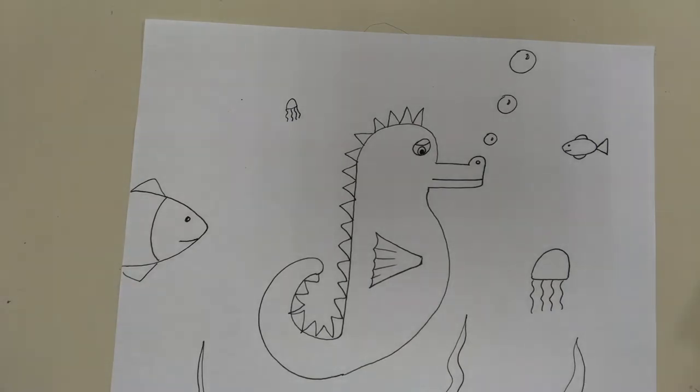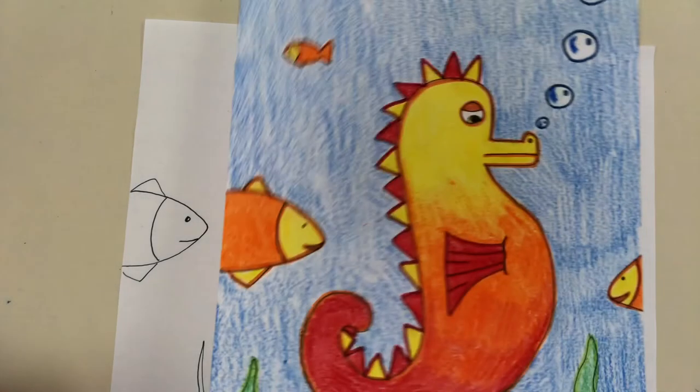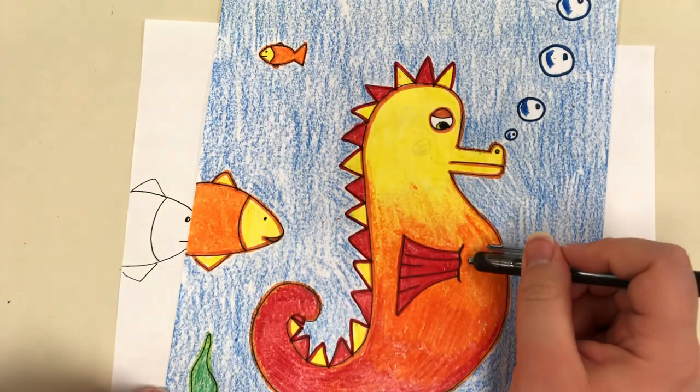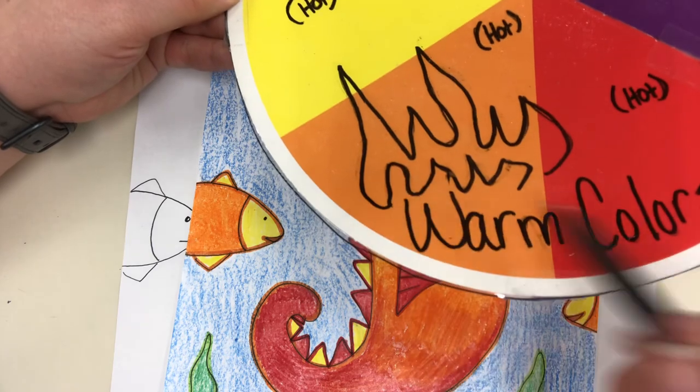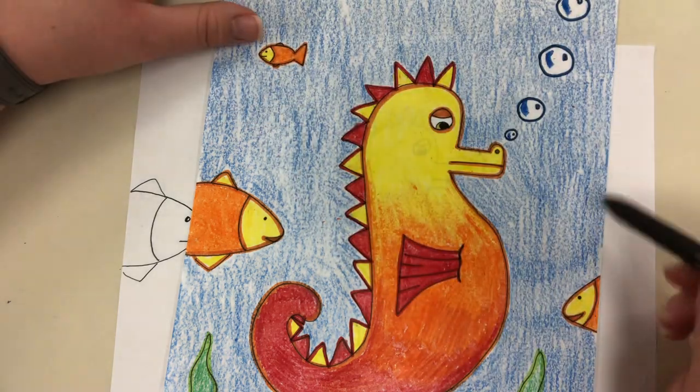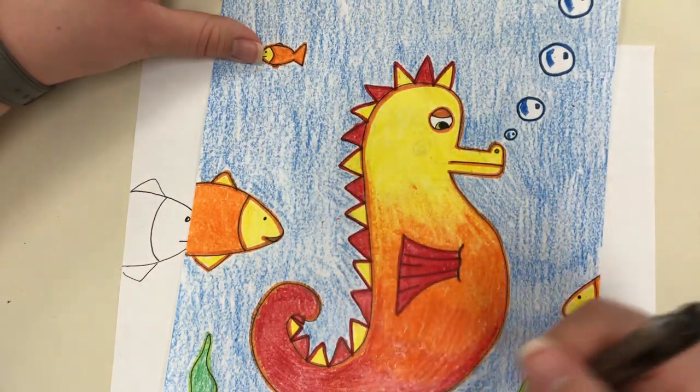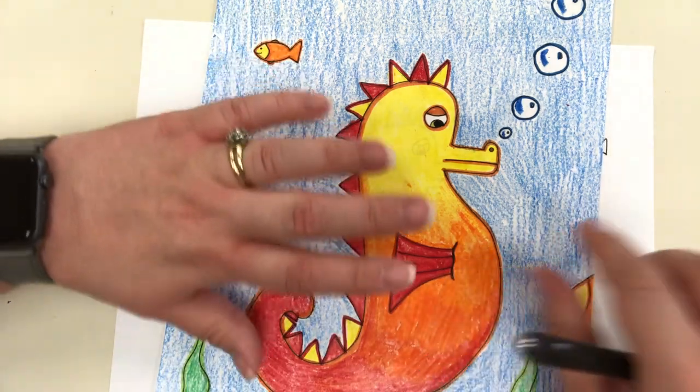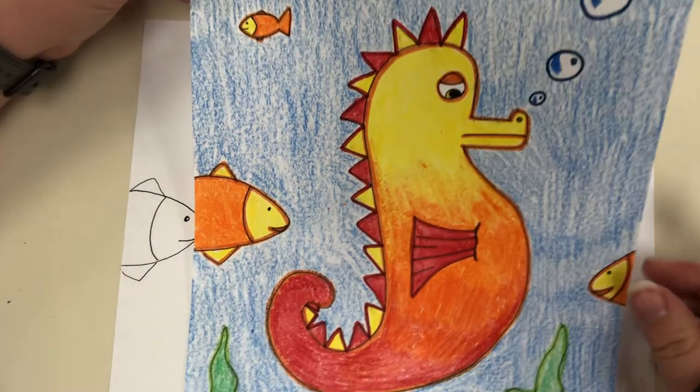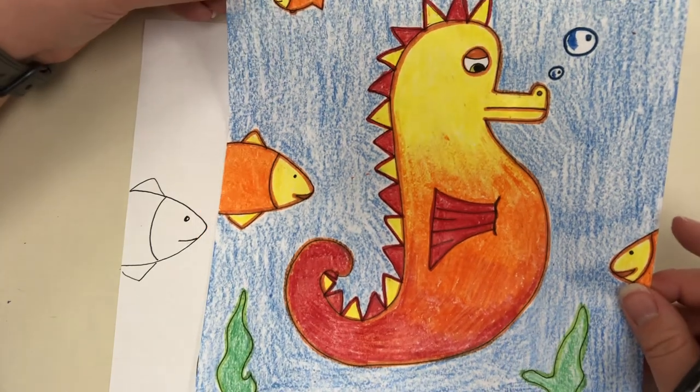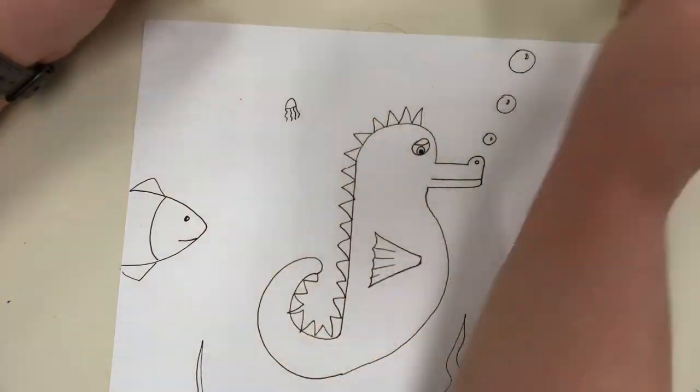Now when you color this, you're going to want to make your seahorse warm colors. Remember, those are colors that look hot. Say 'woo hot.' And you're going to want your background to be cool colors. That way your fish and your seahorse really stand out from the background to create what we like to call contrast. I'd love to see this if you make it. Share it with me. Bye guys.